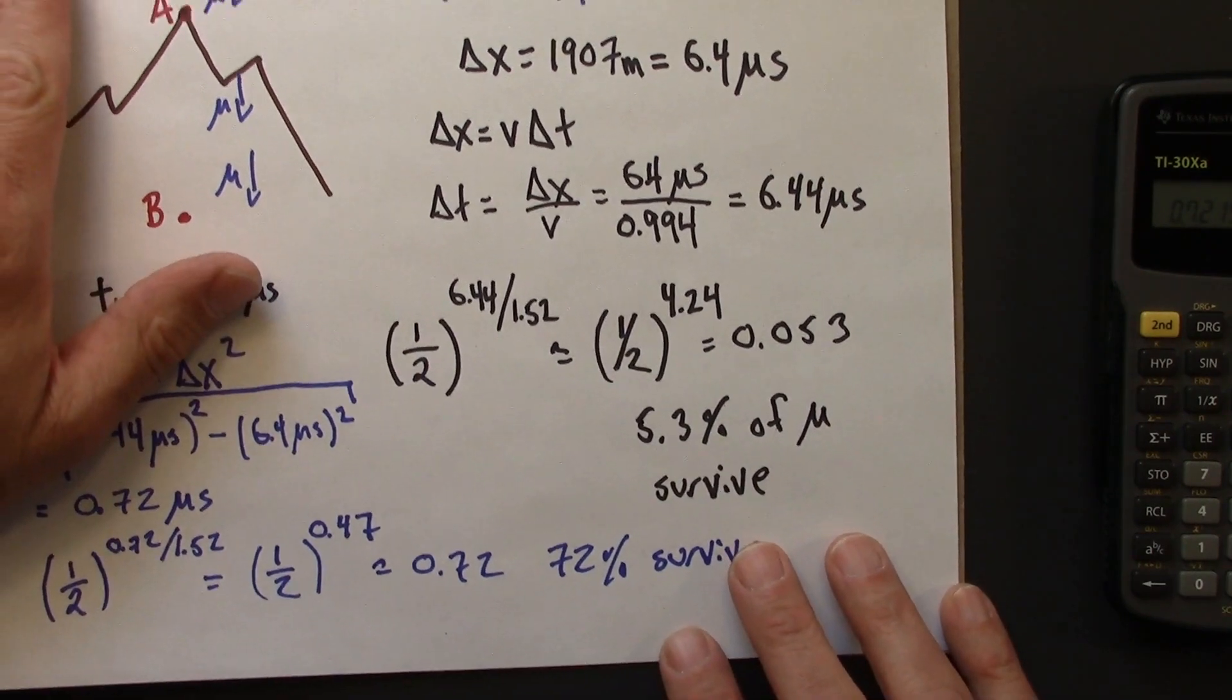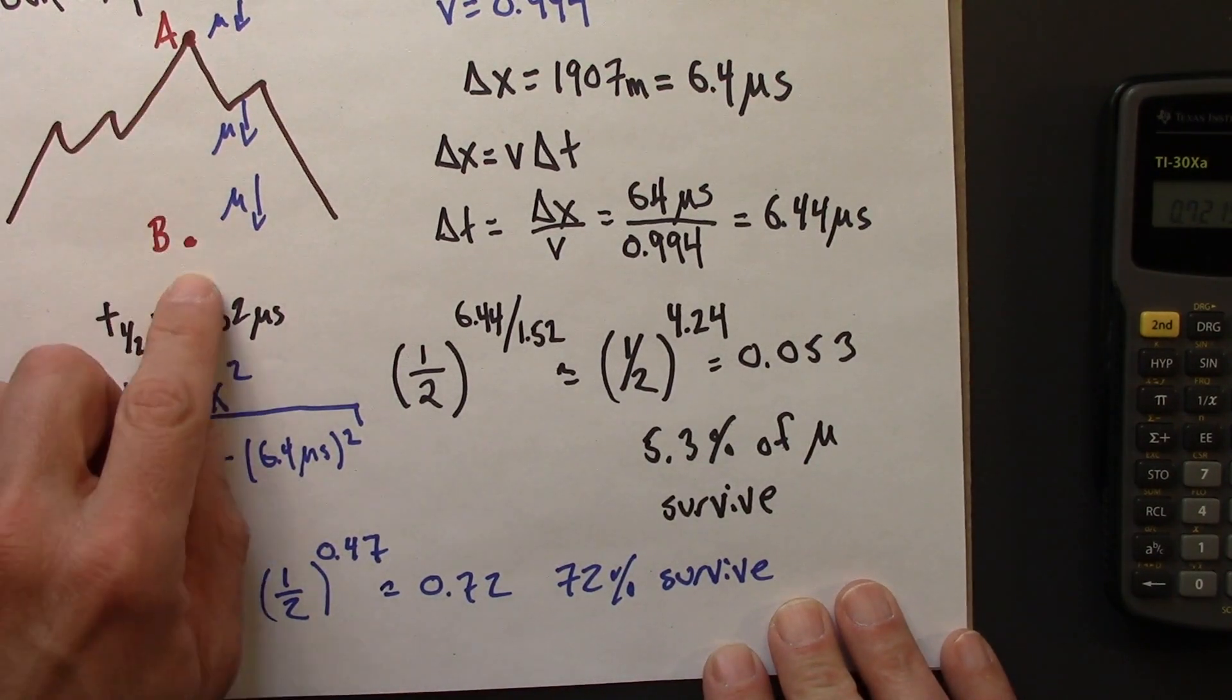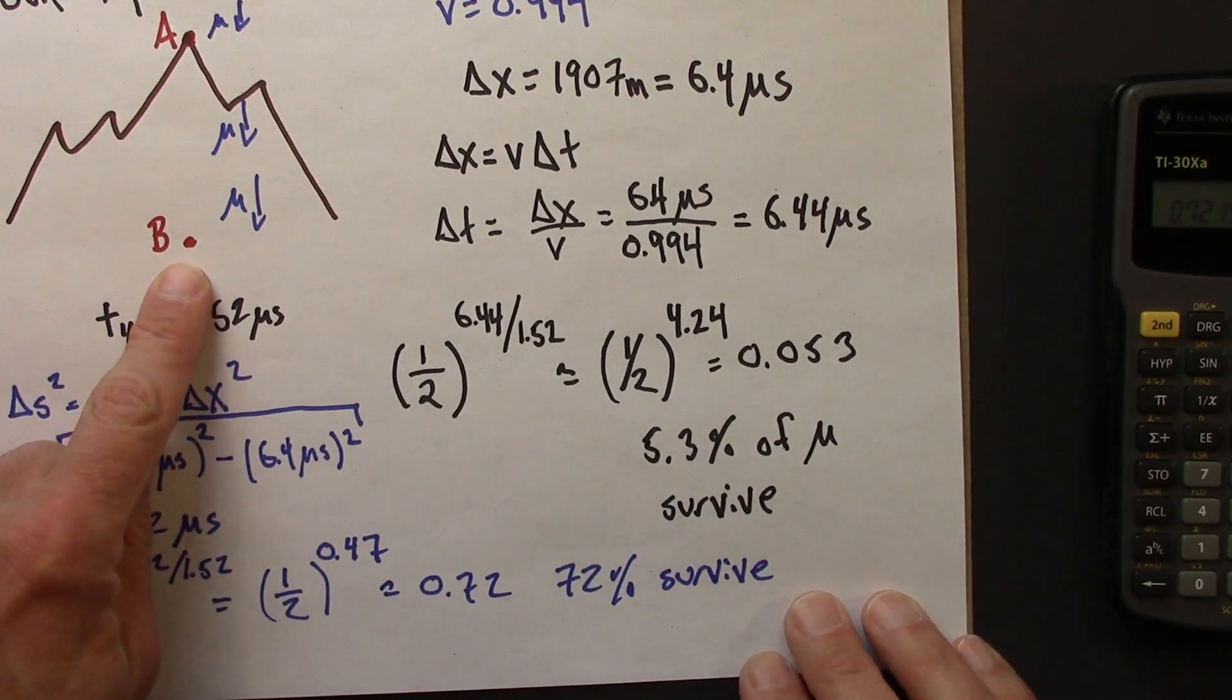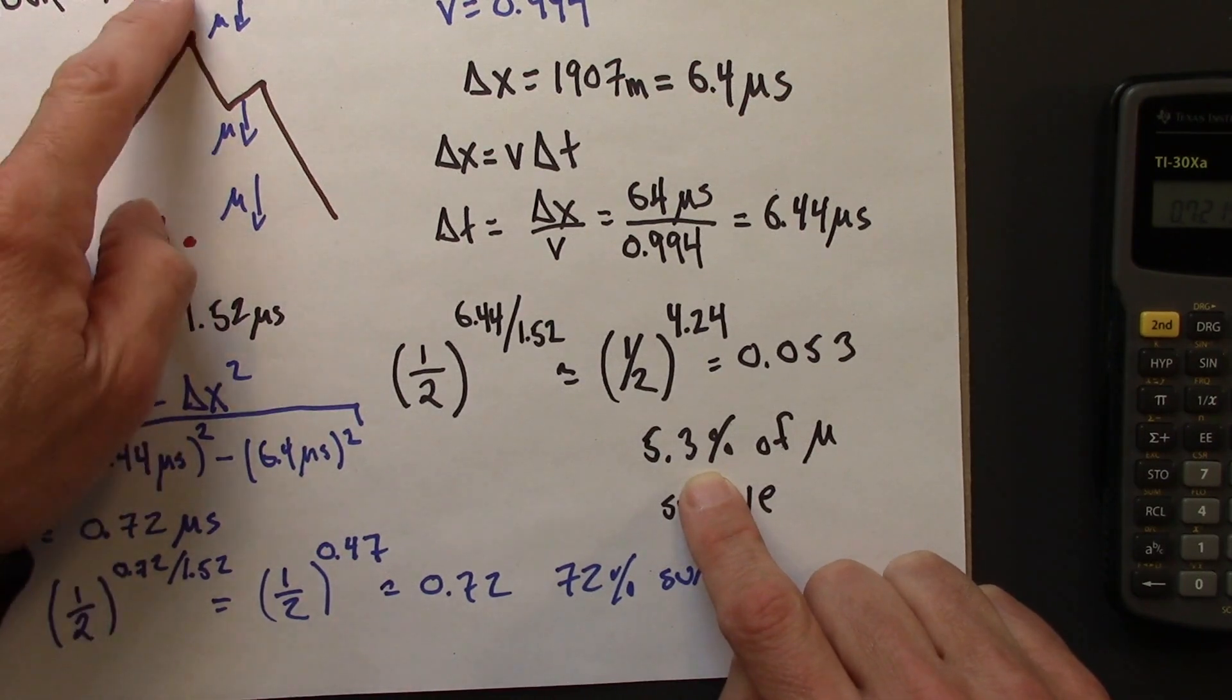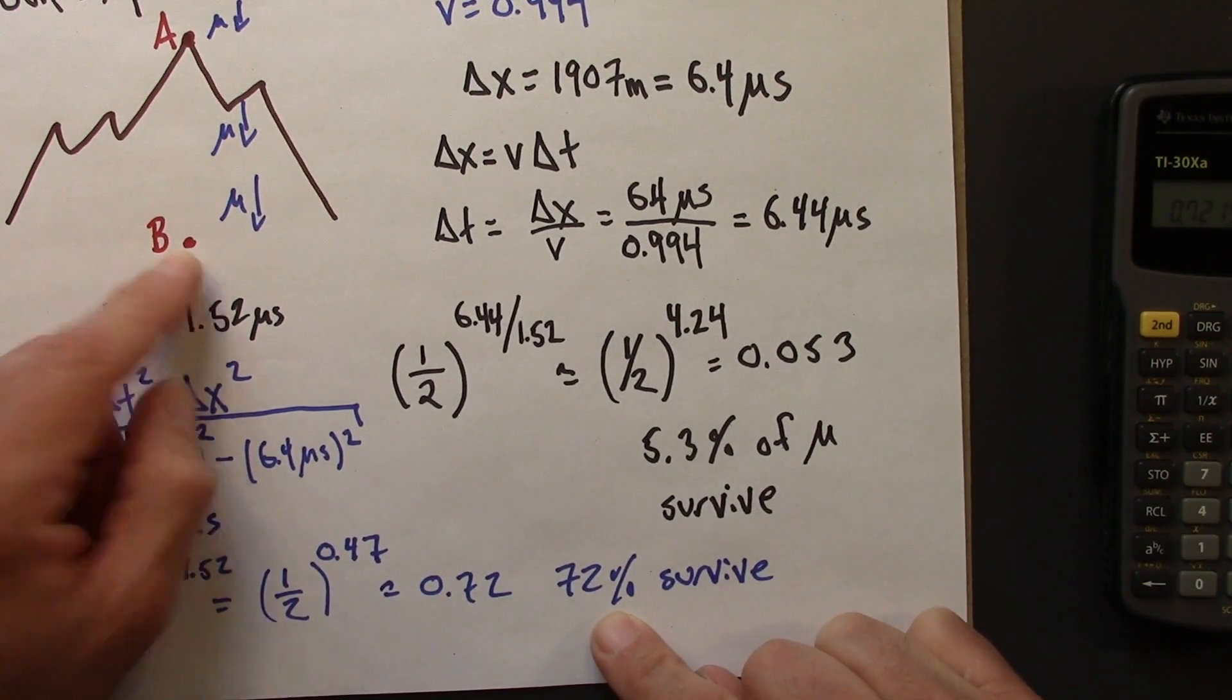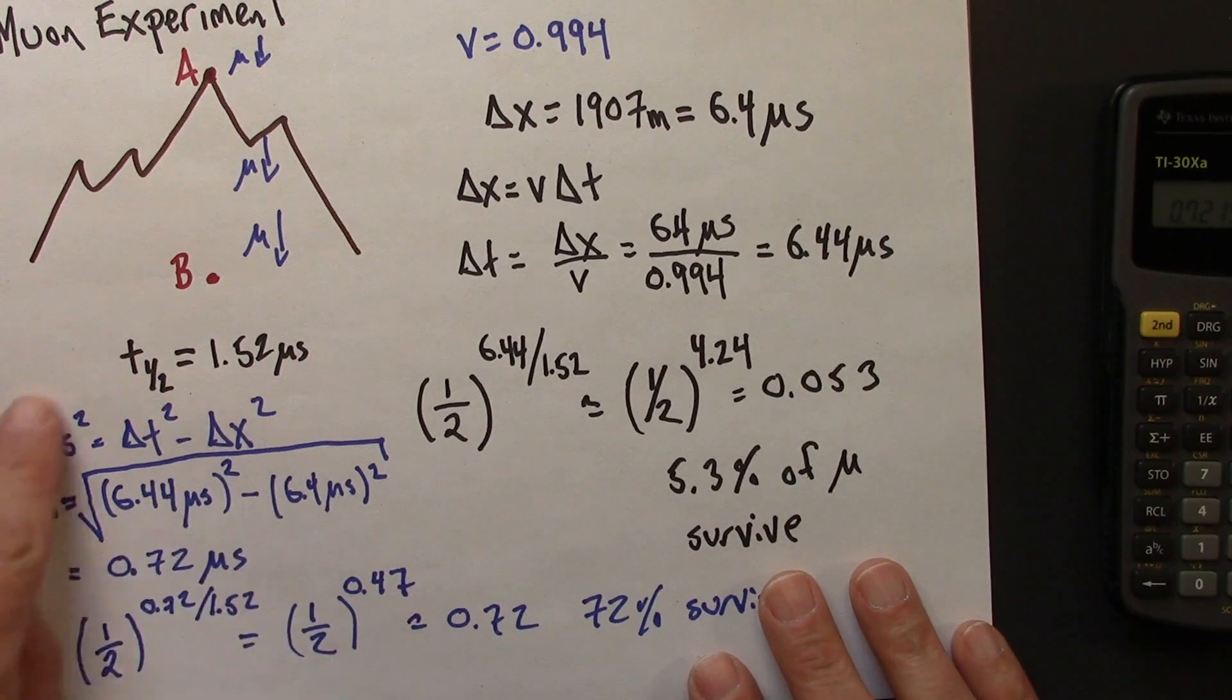So Smith and Frisch did this experiment. They measured the rate of muons at this speed at the top of Mount Washington and down here. If Newton was right, the muon count down here would only be about 5% of what was on top of the mountain. If Einstein was right, the muon count would be around 72%. And it turns out that Einstein was right. This is a nice example of using this metric equation to compare time intervals in different frames, and we were able to connect with an experiment that shows beyond any doubt that the Einsteinian view of time is correct.